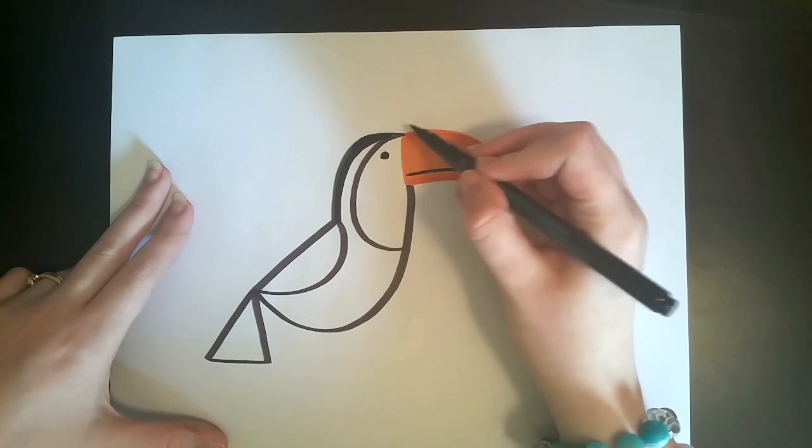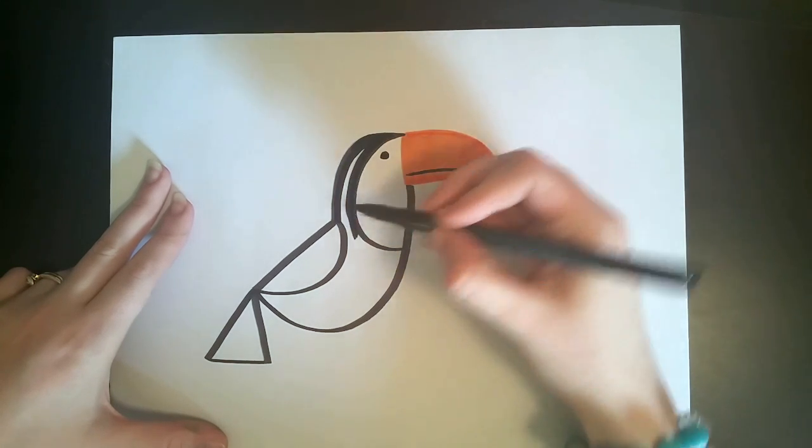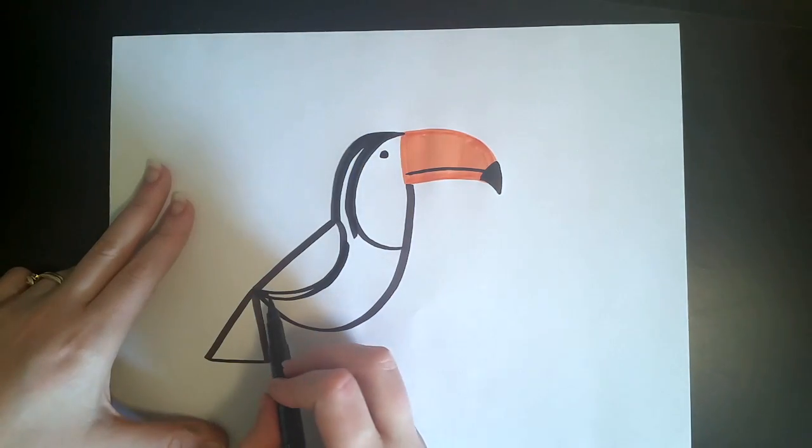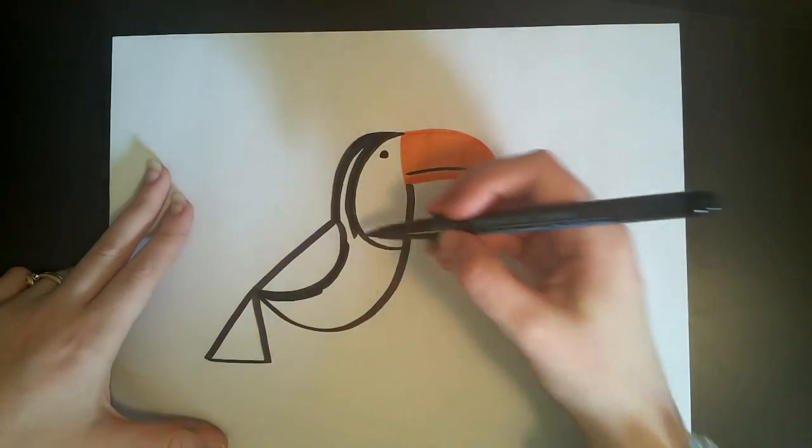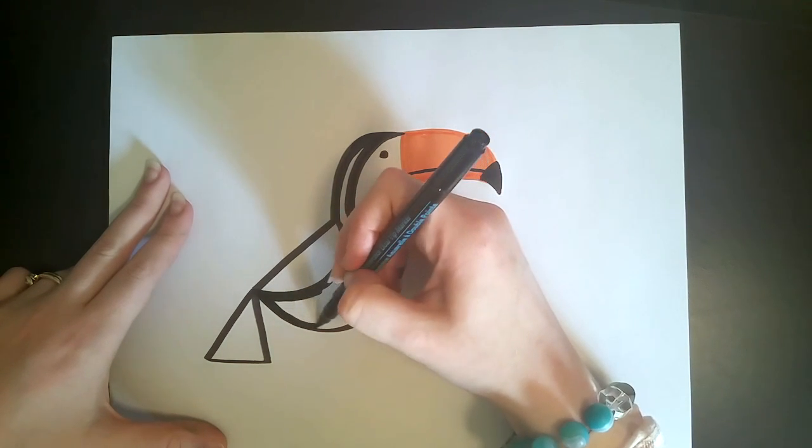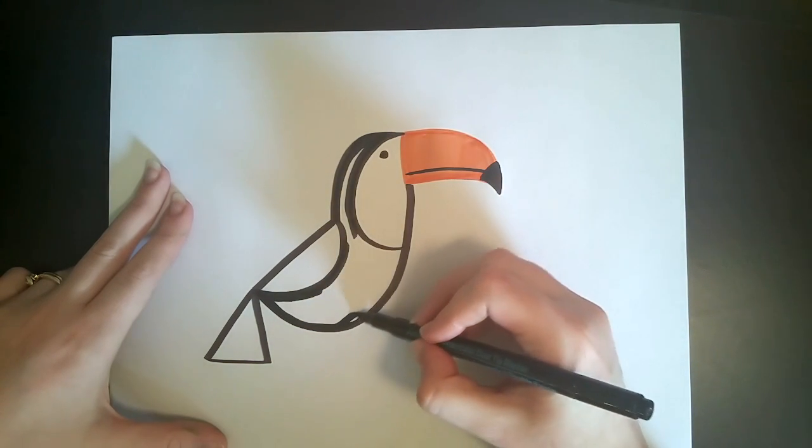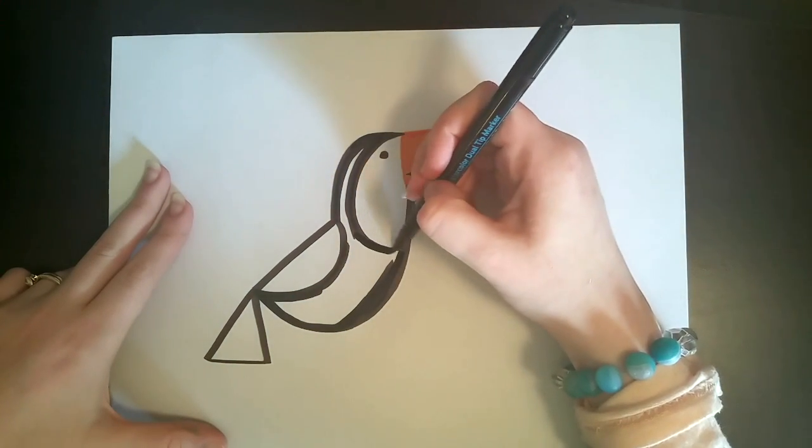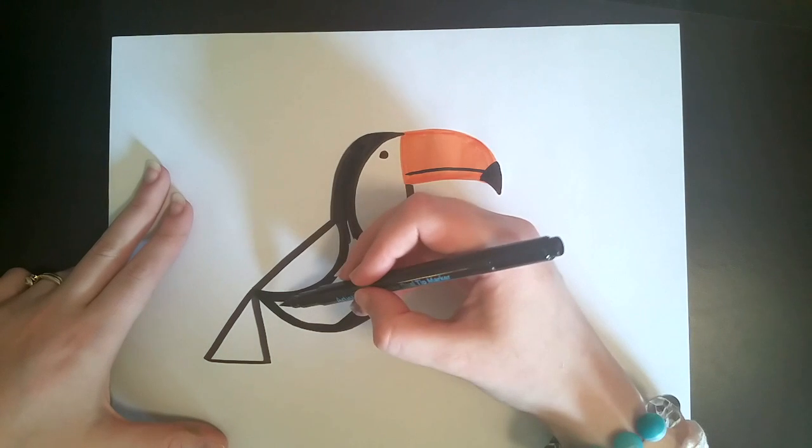And then go ahead, color in exactly where I color in here because we're going to leave some parts. We're just going to color in this middle shape right now. If we just did the whole thing black, it would be technically correct, but it wouldn't look very much like a toucan. That's where we're going to use the dark blue.